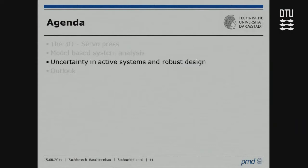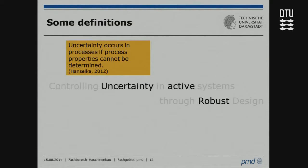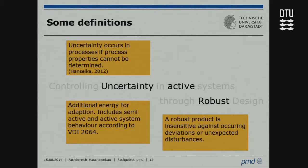Now let's look at uncertainty and robust design. Our goal is controlling uncertainty in active systems through robust design. Uncertainty occurs in processes if process properties cannot be determined. When I talk about active systems, I mean systems that need additional energy for adaptation, including semi-active and active systems. A robust product is insensitive against occurring deviations or unexpected disturbances.